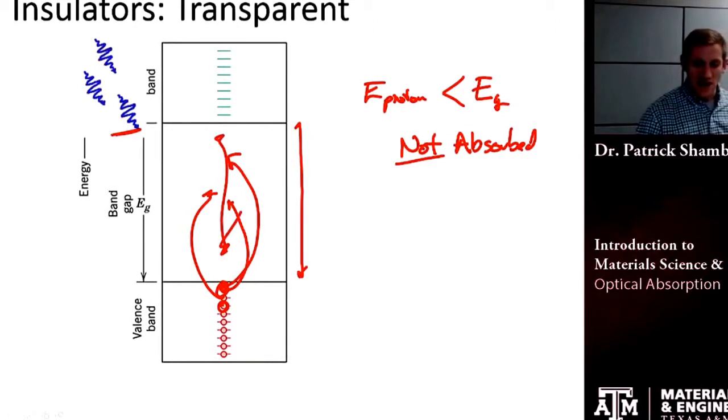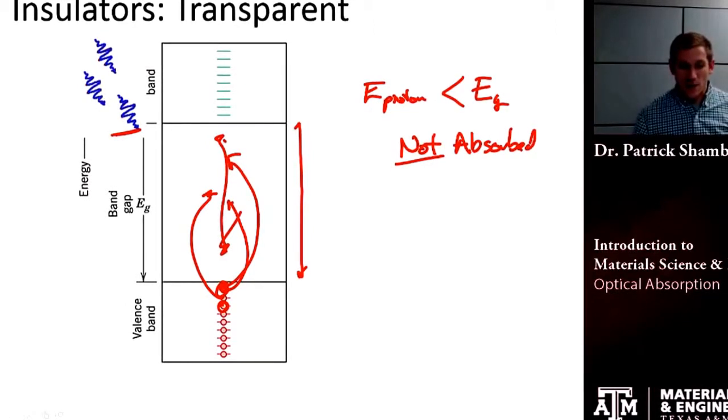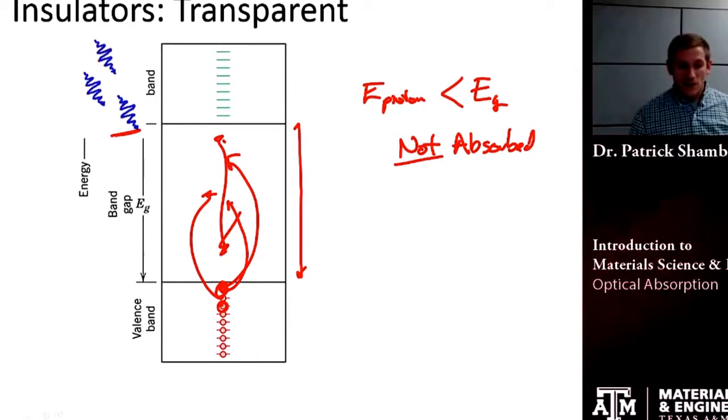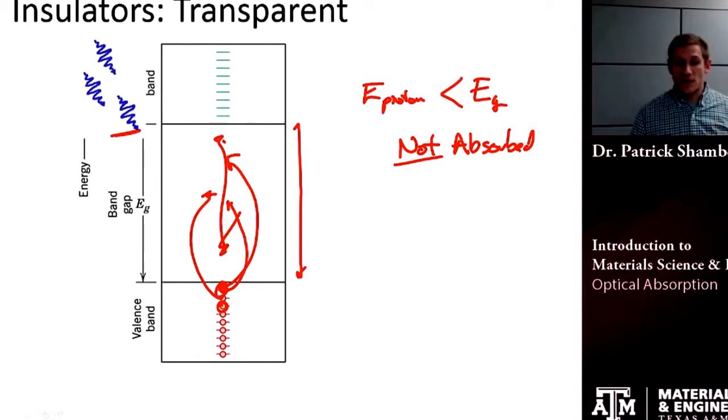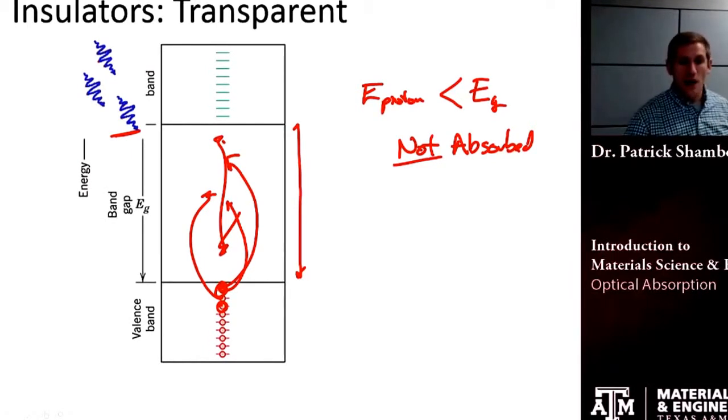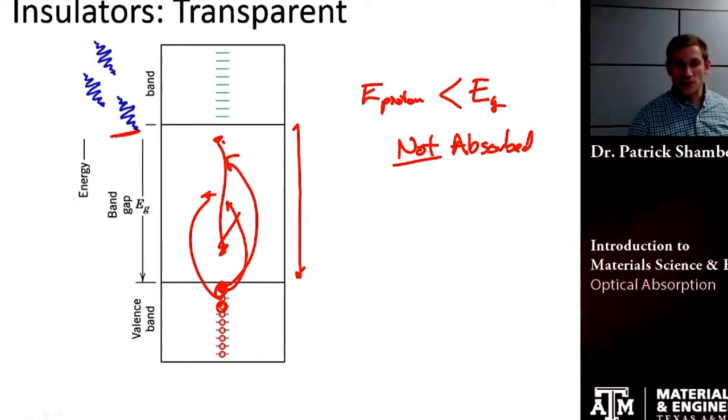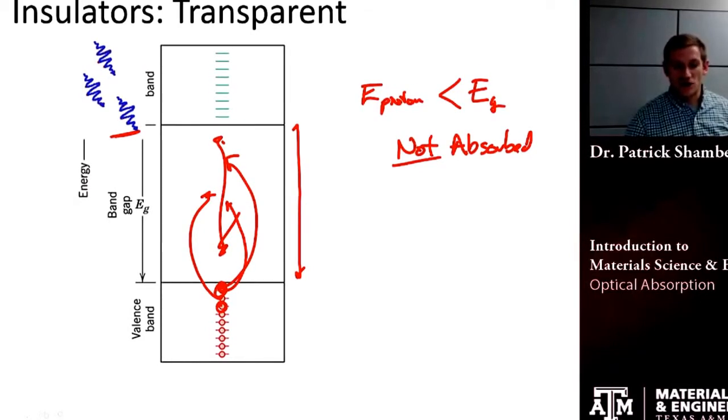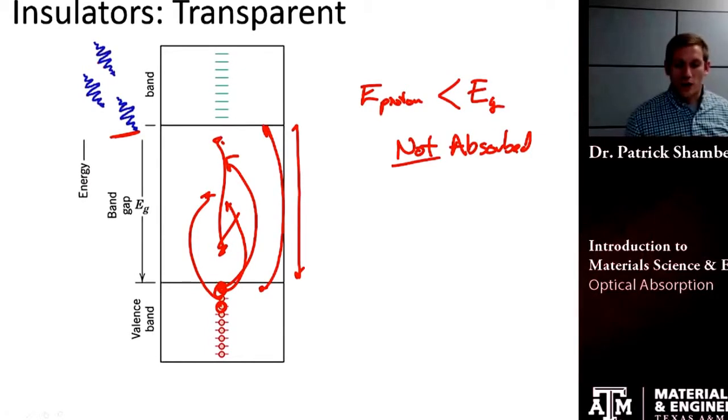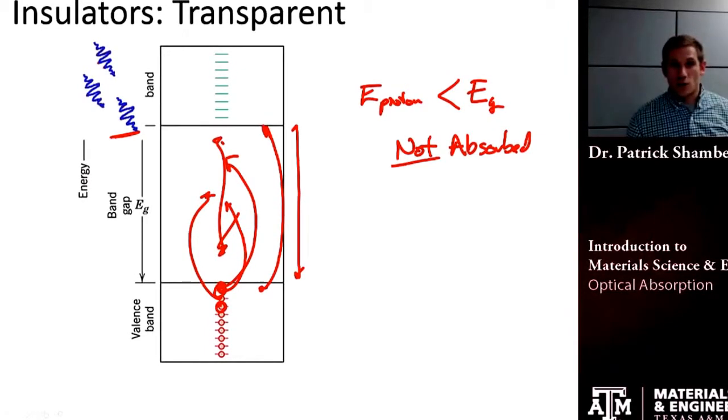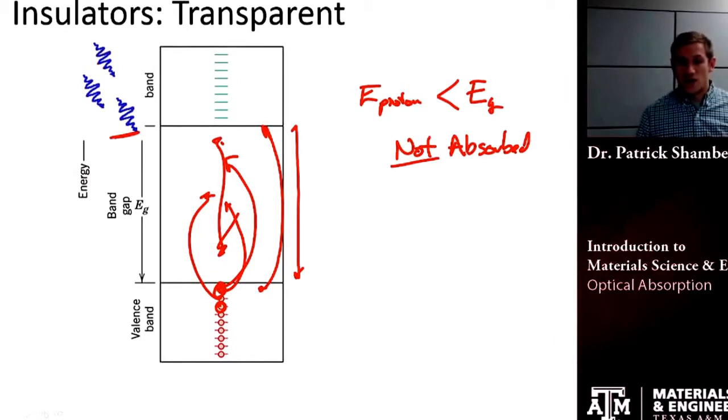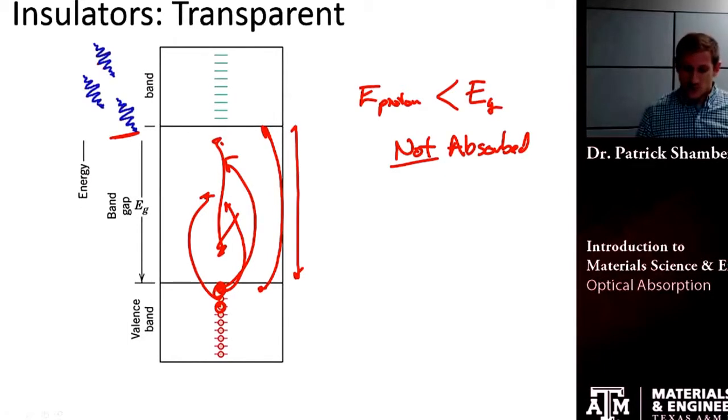Because electrons can't exist within the band gap, I'm not able to absorb those photons. Most insulators have very large band gaps—band gaps that are large enough that all of the optical frequencies of light do not have enough energy to excite an electron all the way across that band gap. In other words, the band gap of insulators or of transparent materials is greater than the energy of visible photons.